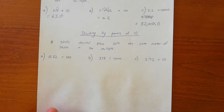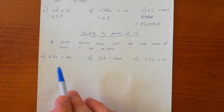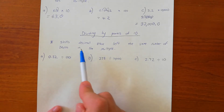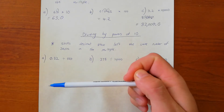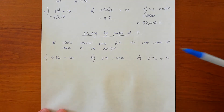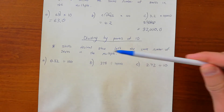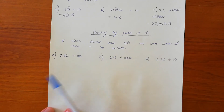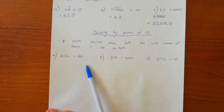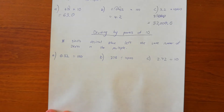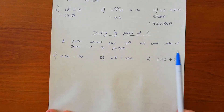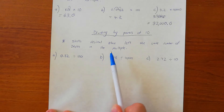Now whenever we're dividing by powers of 10, we do the opposite — we shift the decimal place in the opposite direction: to the left rather than to the right. Left is that way. And we shift it the same number of places as there are zeros in the multiple.